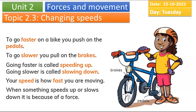To go faster on a bike you push on the pedals — when you push the pedals harder your bike will move fast. To go slower, you pull on the brakes. Remember: if you want to go fast, push the pedals; if you want to go slower, pull the brakes from the handlebar.